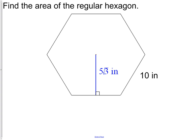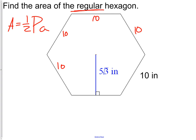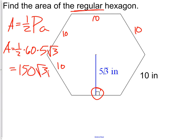Here's a question: find the area of this regular hexagon. Since it's a regular hexagon, we use area equals one-half times perimeter times apothem. The perimeter is the distance around the object; since it's regular, all sides are 10, so six sides of 10 gives a perimeter of 60. The apothem given is 5√3. So area equals one-half times 60 times 5√3. One-half of 60 is 30, and 30 times 5 is 150.